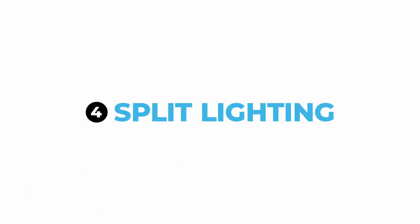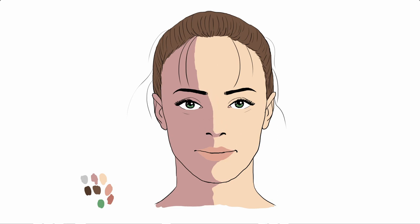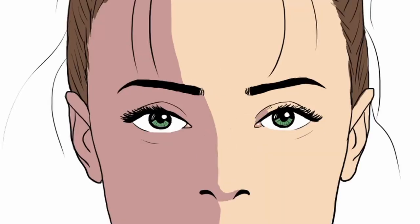Number four is split lighting. Split lighting is when the light is coming straight from the side and here one side of the face is pretty much covered in shadow. It's called like that because light and shadow are pretty much evenly split among the face. Only a few areas in the light area are covered in shadow — in this case, the left side of the eyeball and the eyelids.